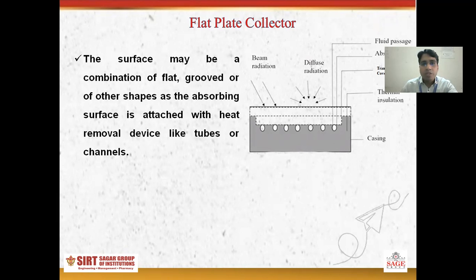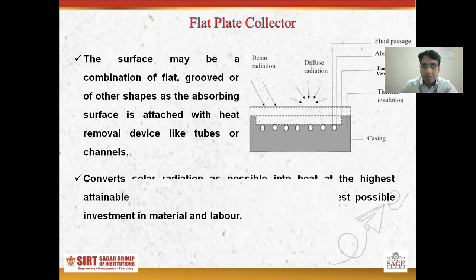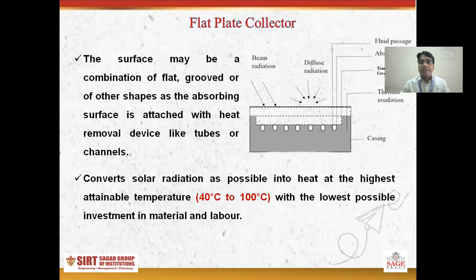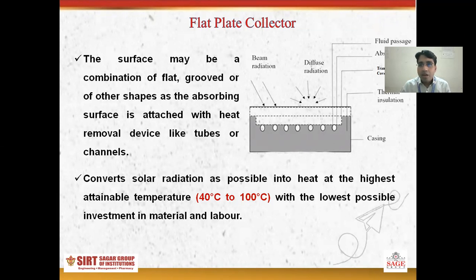The absorbing surfaces are attached with a heat removal device like tubes or channels, and convert as much solar radiation as possible into heat. The highest attainable temperature is about 40 to 100 degrees centigrade, with the lowest possible investment in material and labor. This concludes the overview of the flat plate collector.